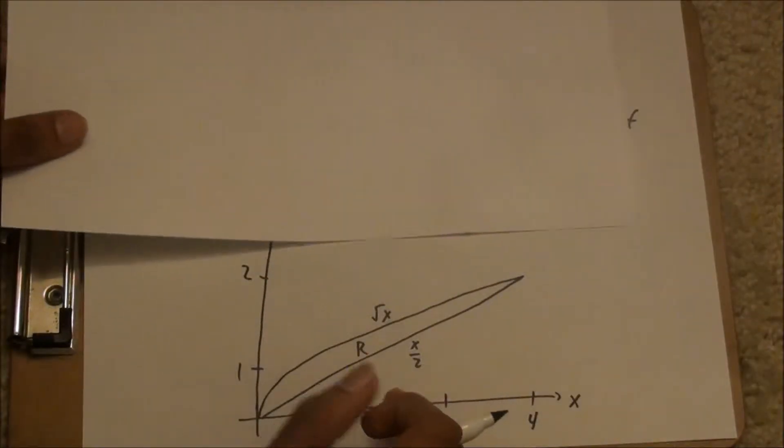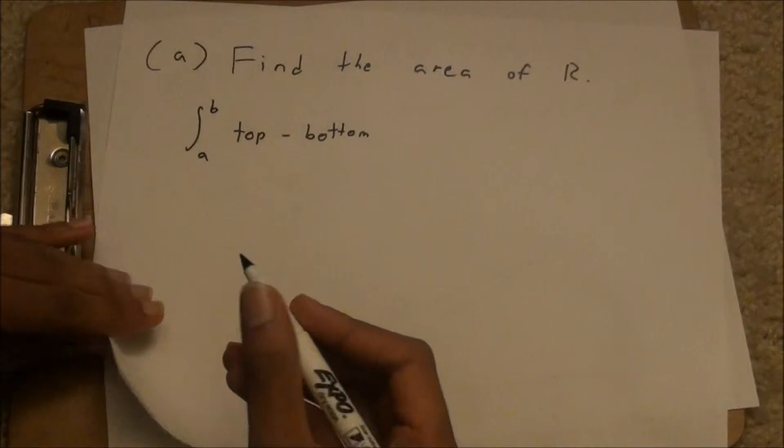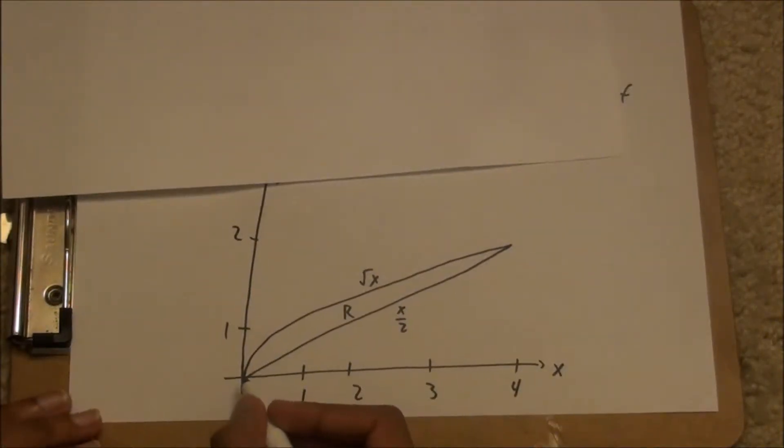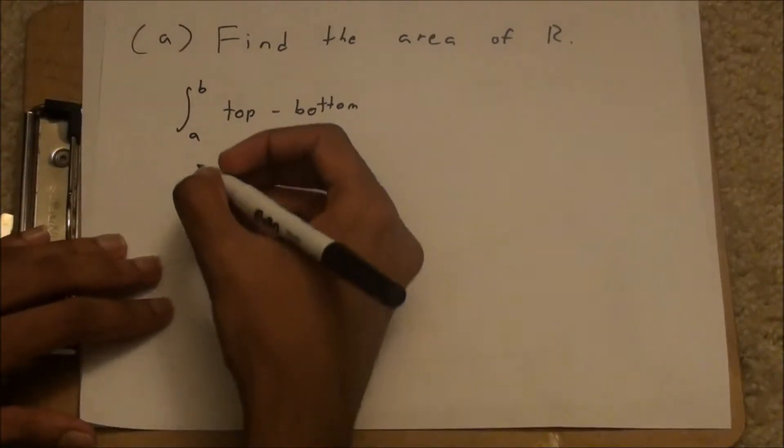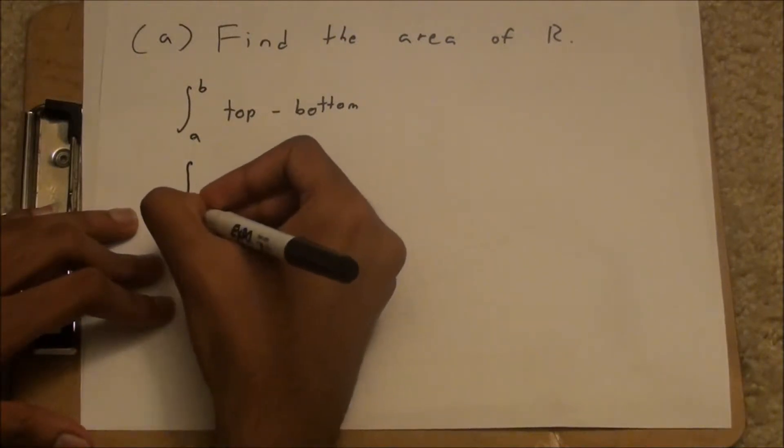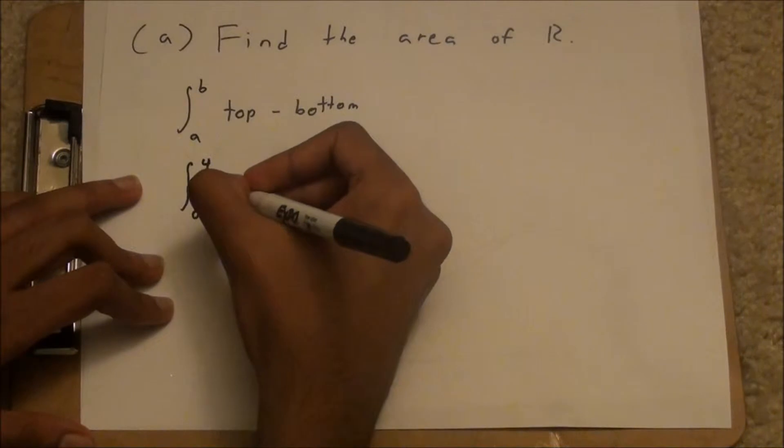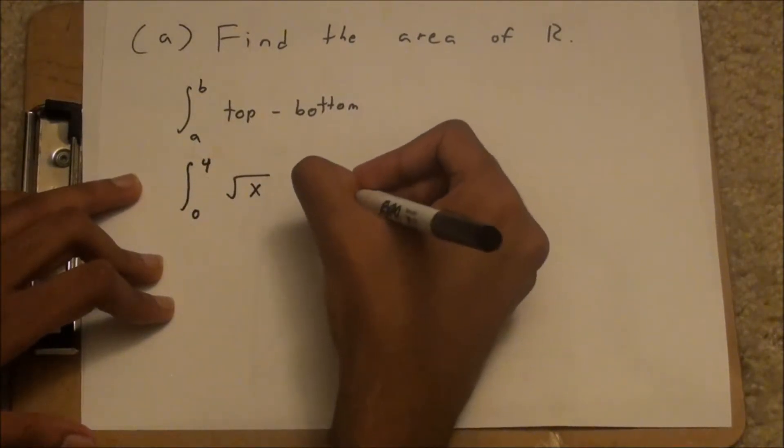And according to this graph, the square root of x is on top, and x over 2 is on bottom. So just plug that in. And your limits of integration show the intersection points are 0 and 4. So you would have the integral from the limits 0 to 4 of the square root of x minus x over 2 dx.